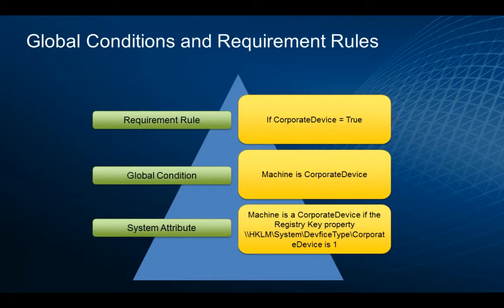The global conditions are made up of a several-tiered system of rules that we verify when an application installation is commenced. There are requirement rules, the global condition, and then a supporting system attribute. The requirement rule is a yes-no — do we pass or fail on a validation check? In this example, we're looking for a corporate device value. The attribute we're looking for is a registry key value placed by IT during a corporate asset build.